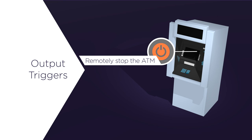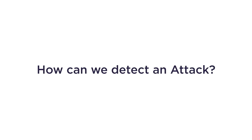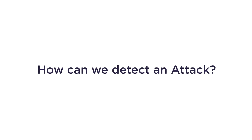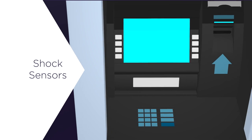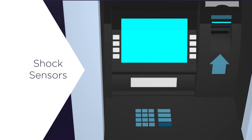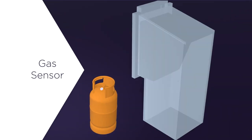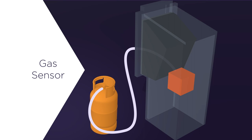Once the criminal's device has been removed, it can then be reactivated remotely. How do we detect an attack? The shock sensors: our sensors will detect any forced entry or impact onto the ATM machine. The gas sensor: our combustible gas sensor will detect gases used to attack the ATM.